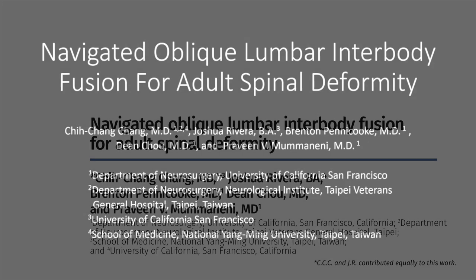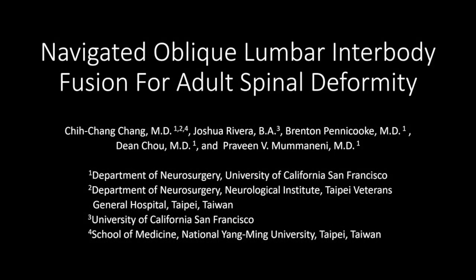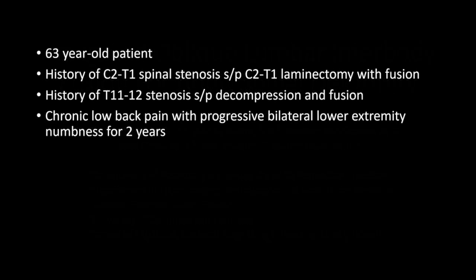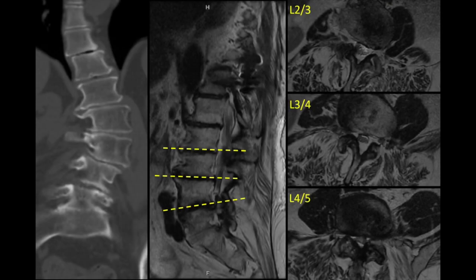This is a video of the navigated oblique lumbar interbody fusion. The patient presents with the chief complaint of back pain with progressive lower extremity numbness for two years. These are the radiographic images; on the left you can see the CT scan demonstrating the lateral listhesis at L3-4.